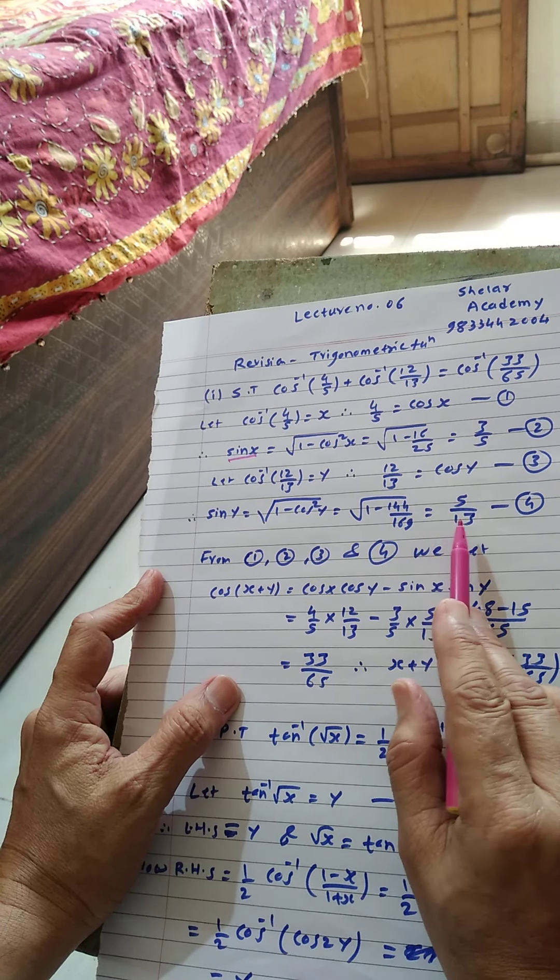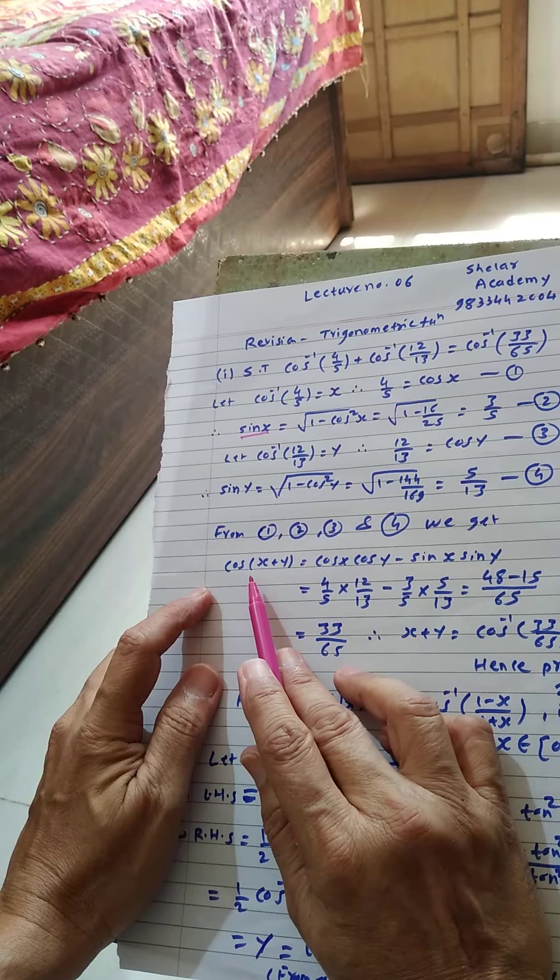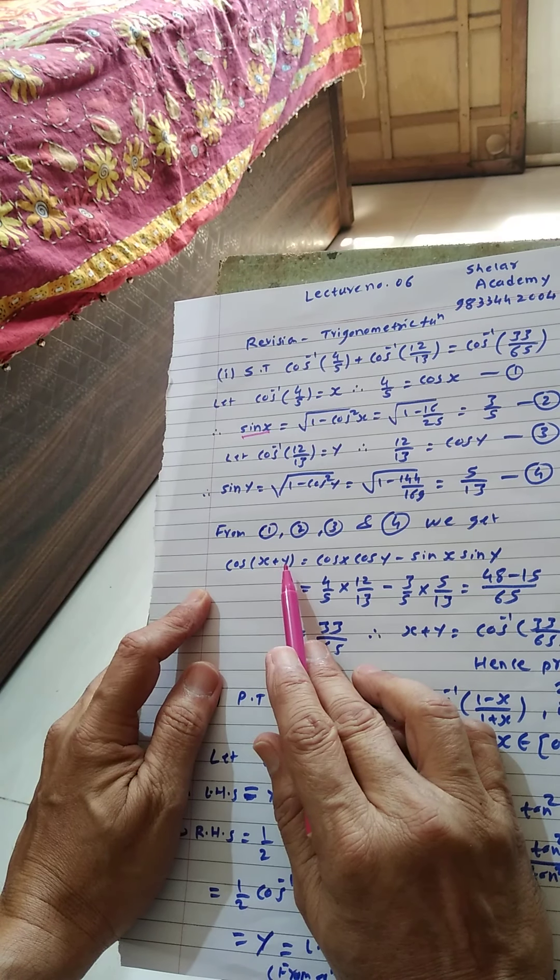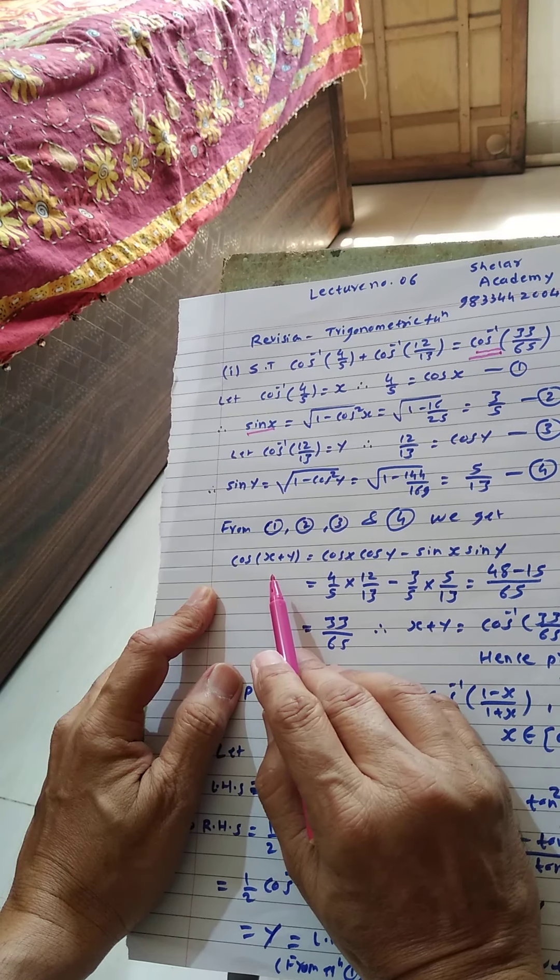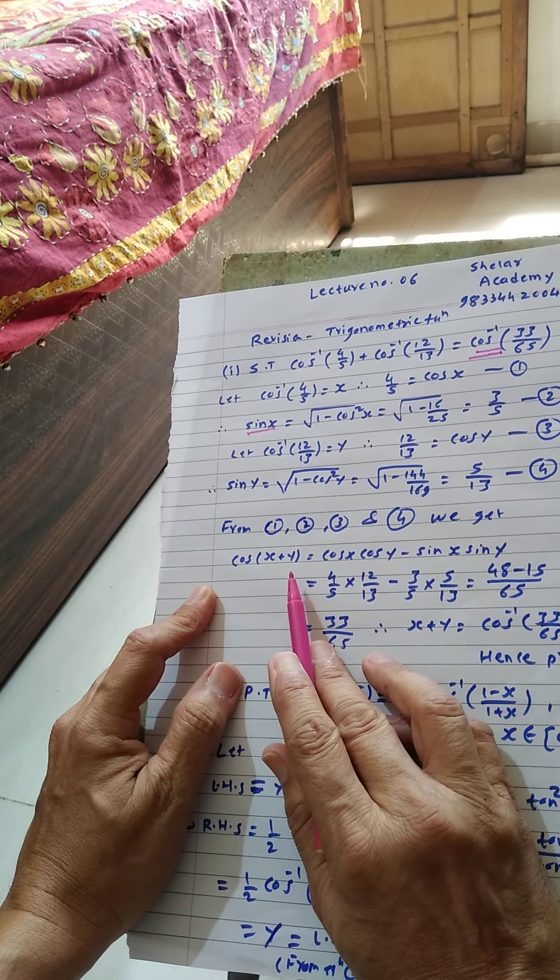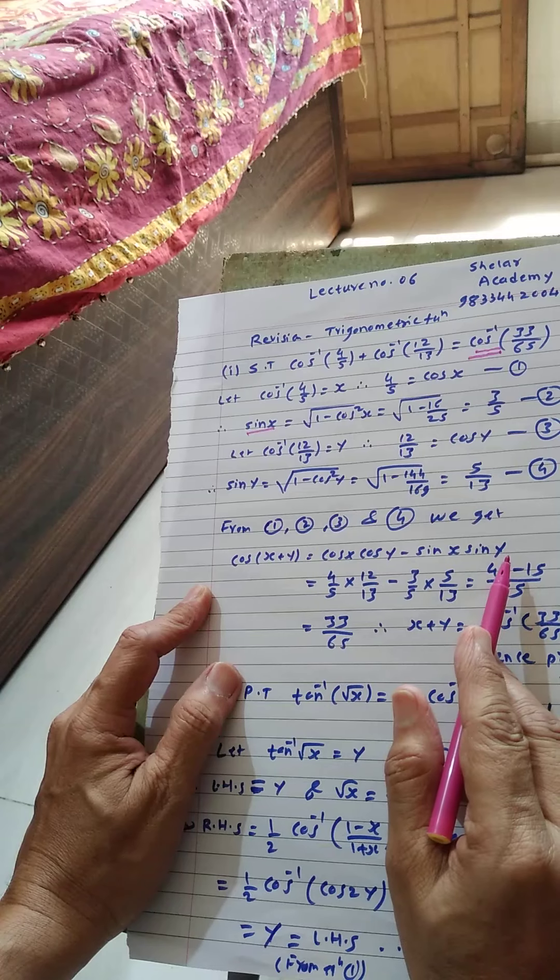And from equations 1, 2, 3, 4 we get, and here we are using the formula of cos x plus y. Why cos x plus y? Because right hand side we want cos inverse. If right hand side required sin inverse, then we are using sin x plus y formula.